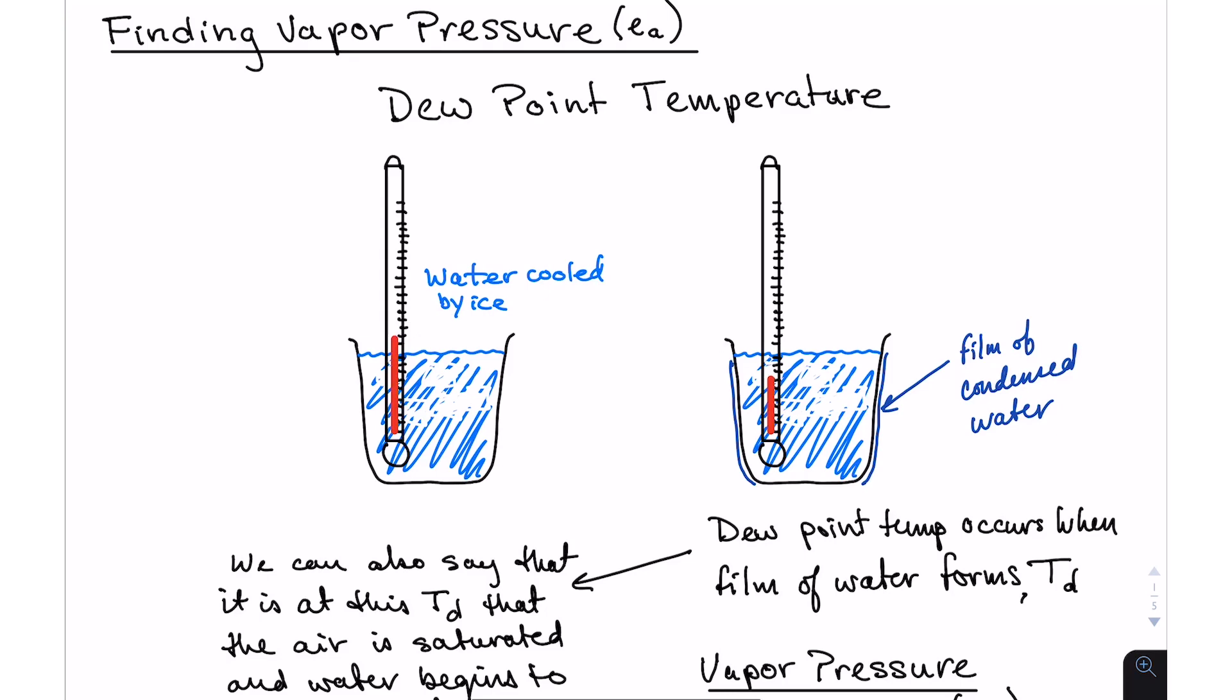So the first one we're going to talk about is dew point temperature. I've drawn a couple of figures here that illustrate a test that I actually did when I was a graduate student in a biophysics class. The professor had us take a beaker of water and a thermometer. We put ice in this beaker and started to stir it with the thermometer, rotating it around in the glass. Our job was to sit there and look very carefully and find out when a thin film of dew began to form on the glass.